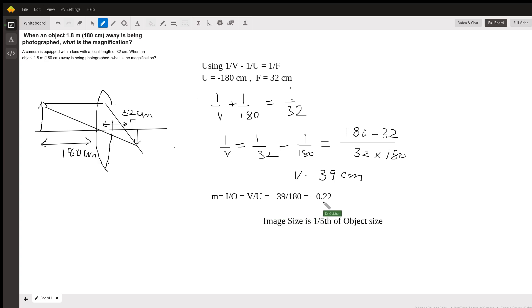So the magnification is 0.22, and this is a dimensionless quantity. The image size is approximately one-fifth of the size of the object. The image is real, it is upside down, and it is reduced in size. Its magnification is one-fifth, meaning the size of the image is reduced to one-fifth of the original size.